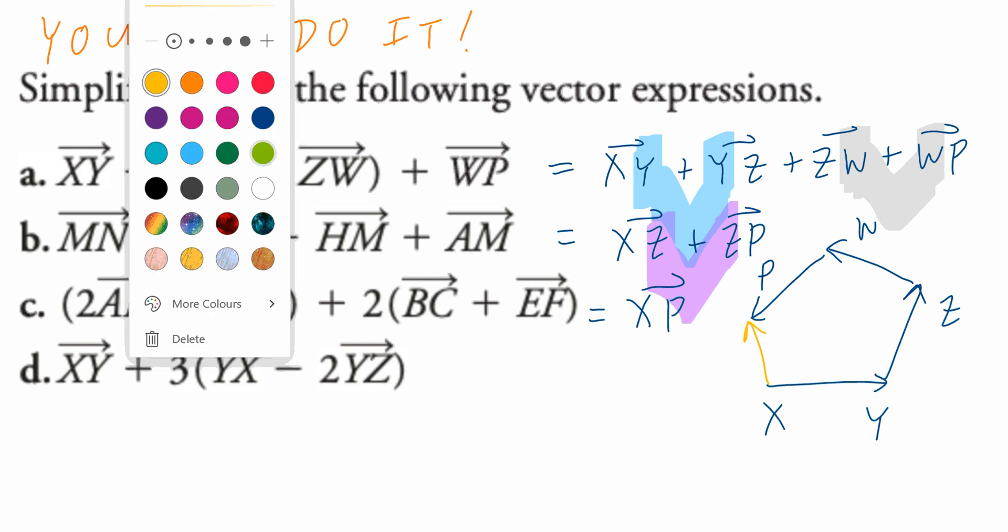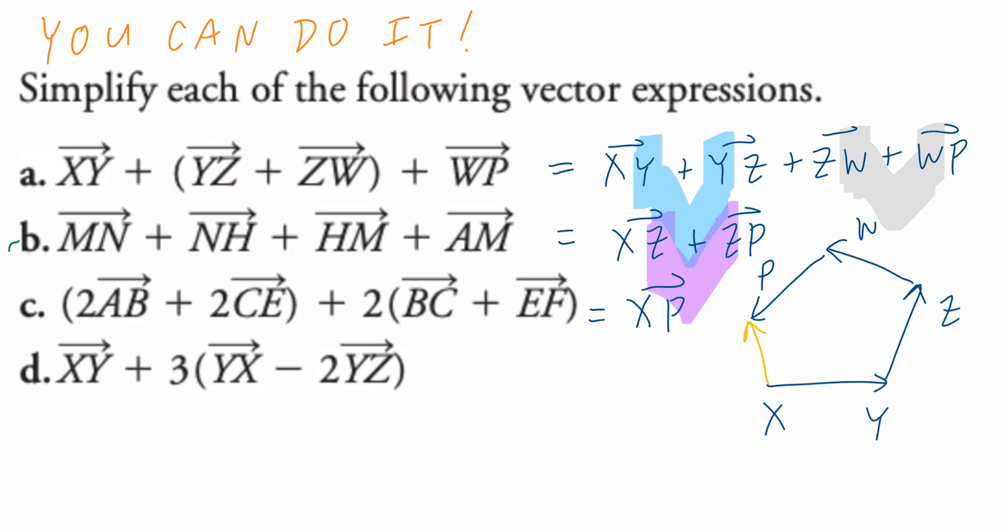Let's keep going. Part B. Vector MN plus vector NH plus vector HM plus vector AM equals to. I'm going to write the last one first. Vector AM plus vector MN plus vector NH plus vector HM.